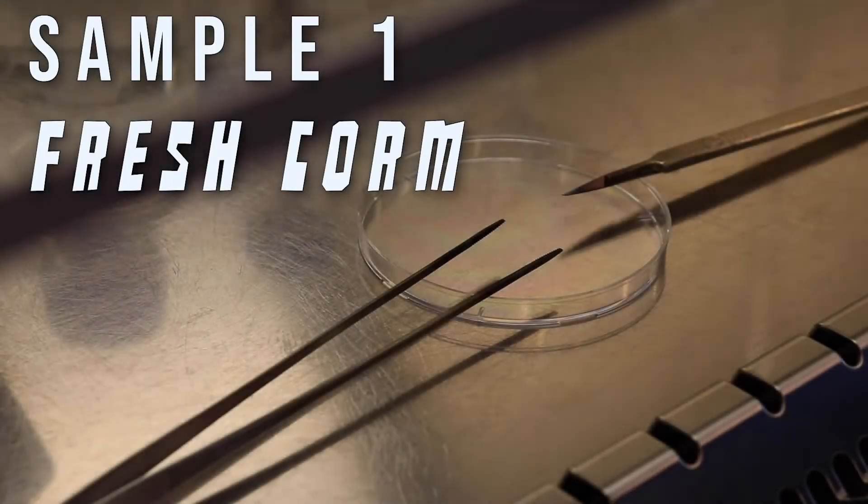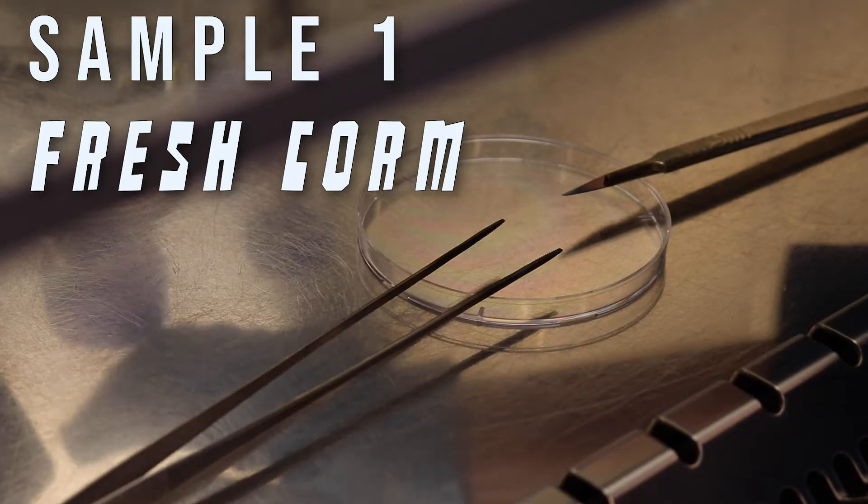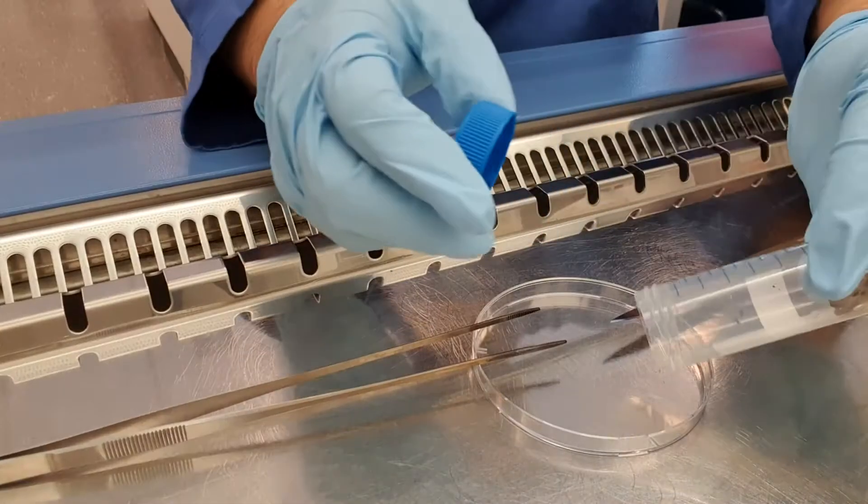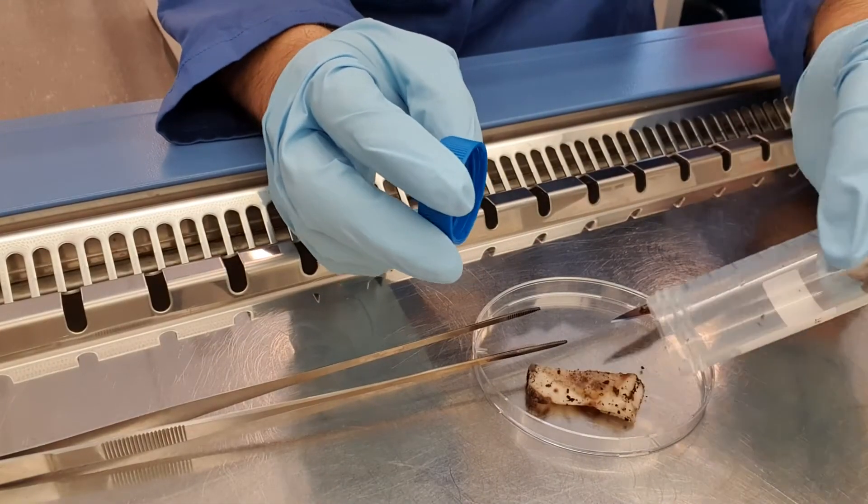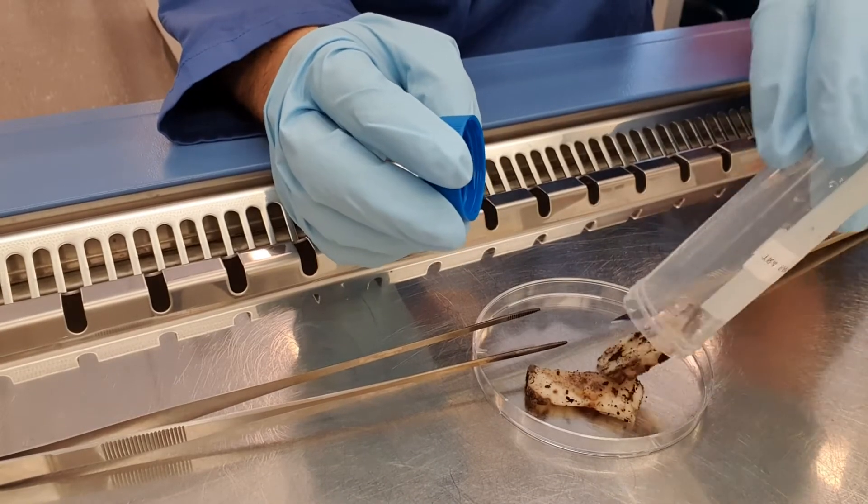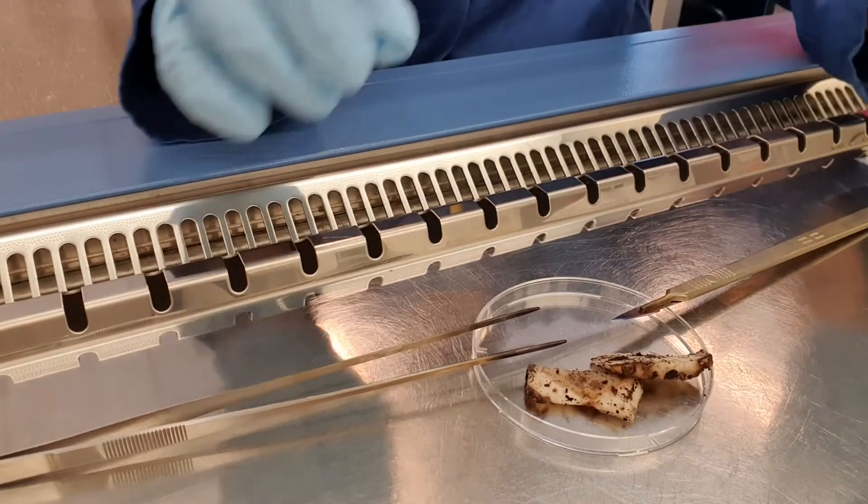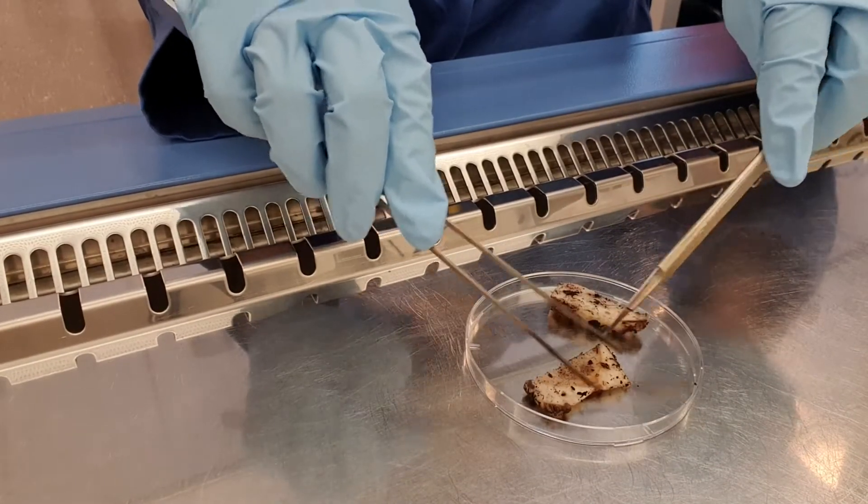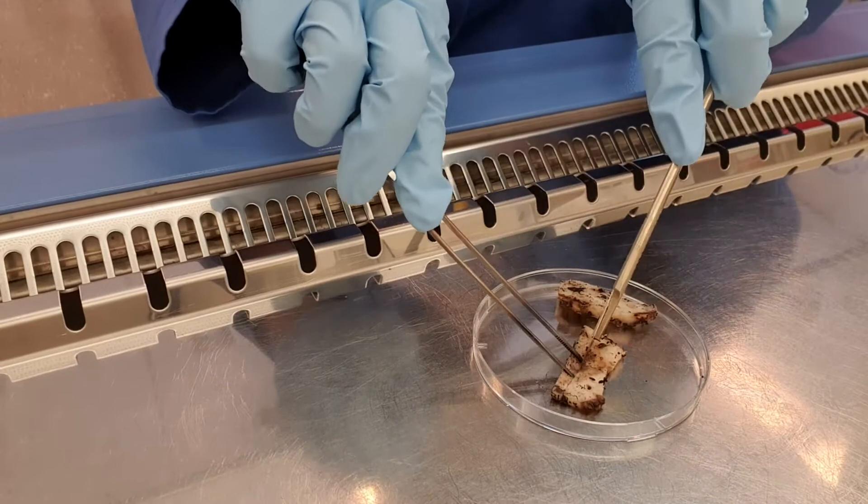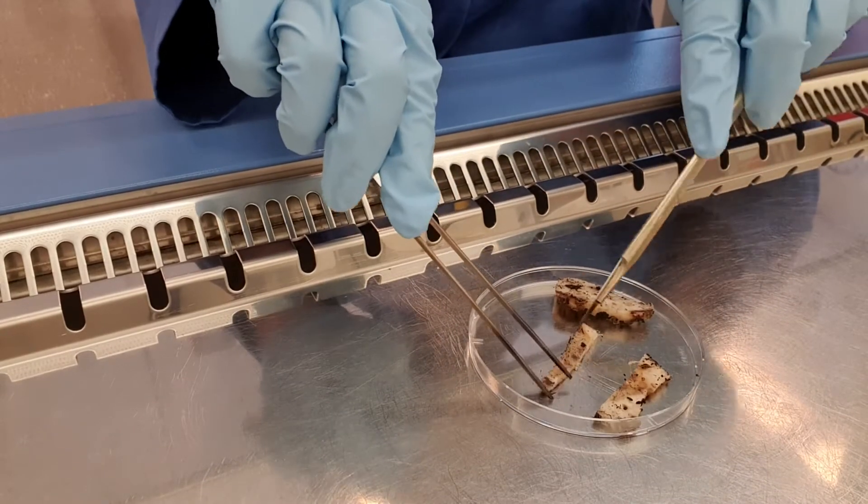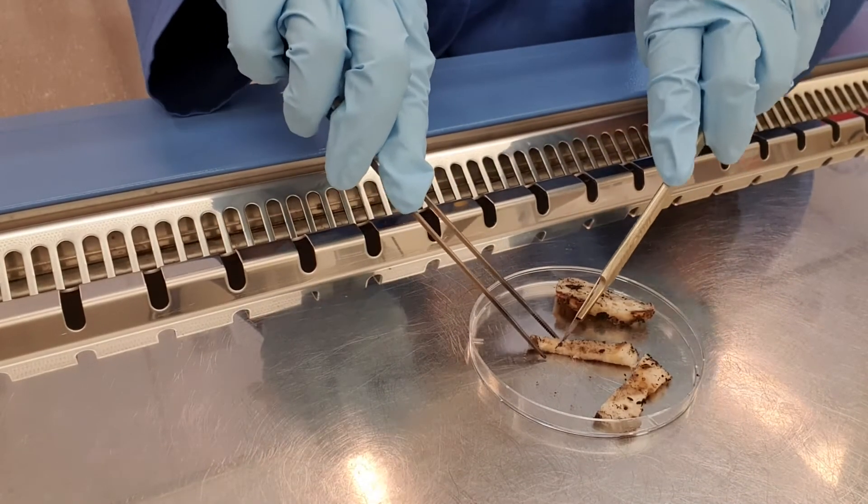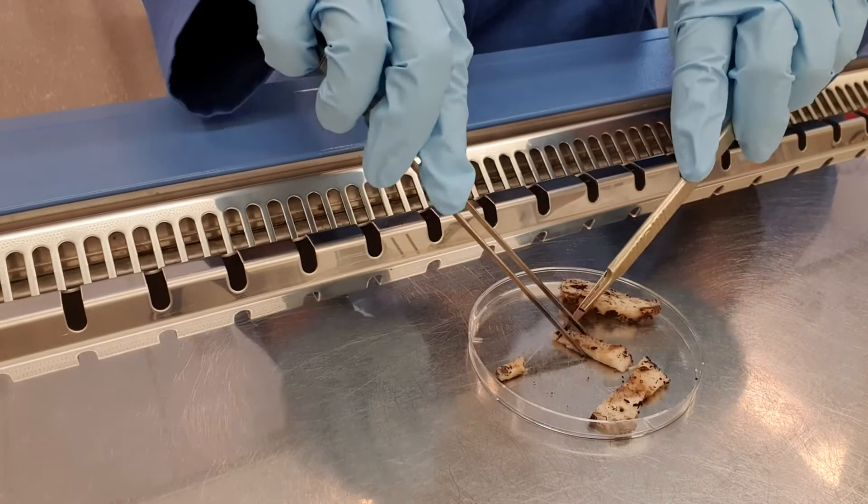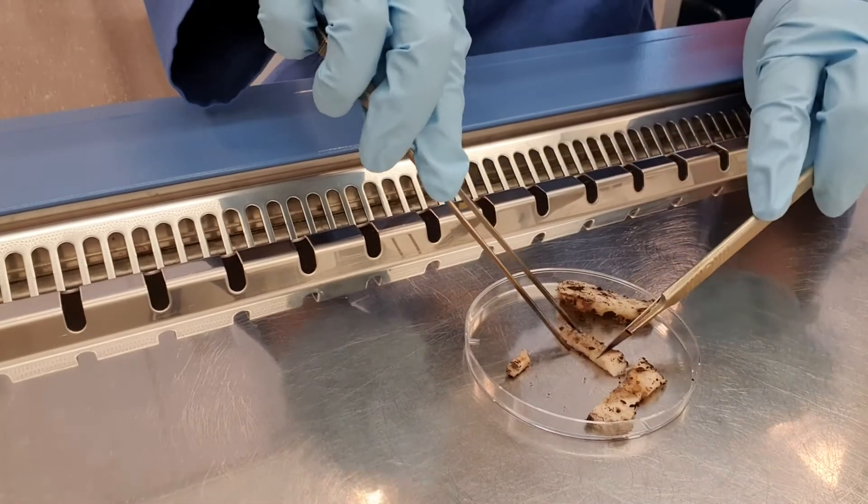We are going to start with sample number one, fresh corn. By the way, we need an additional petri dish in which we are going to cut the material. So we place our samples and now the only thing we need to do is make small pieces. You have to try to cut along the complete diameter of the sample. In that case, you are going to take a good representation of the sample and then just make small pieces.